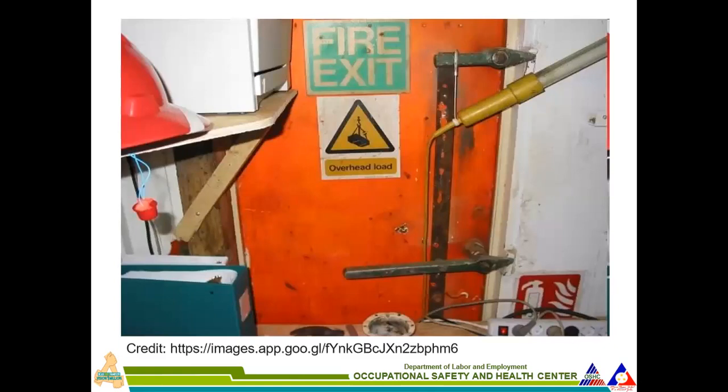Here is an example of an unsafe condition. This area should be a fire exit, but it was turned into a stockroom — piled with unused equipment. Look at the floor: many wires are plugged in, possibly overloaded. This is exactly what we must avoid happening at our fire exits. At any time of day in case of emergency, workers and employees must be able to exit quickly. Find a way to remove those obstructions.